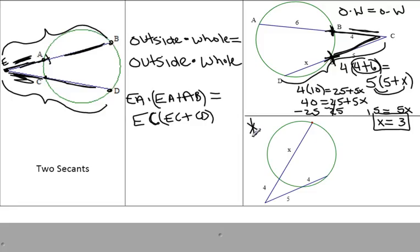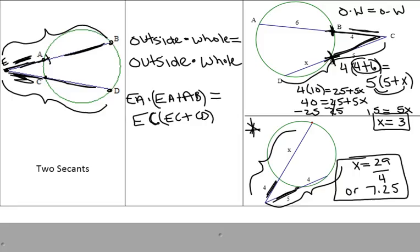I'd like you to pause the video and try the next example. Remember, it's the outside times the whole length equals the outside times the whole length. Pause your video and see if you get what I get. Okay, and you should have gotten that x is 29 fourths or 7.25. If you didn't get that, raise your hand or ask a neighbor. You are ready to move on to the second video located under Dropbox.